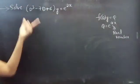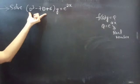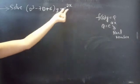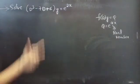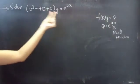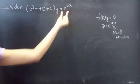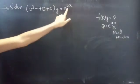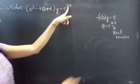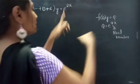Problem: Solve (D³ - 7D + 6)y = 3e^(2x), which is an F(D)·y = 3e^(ax) form, where a is a real number.